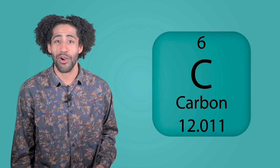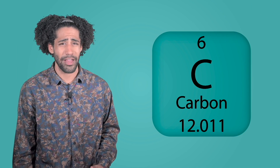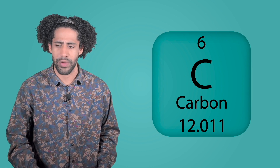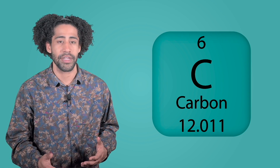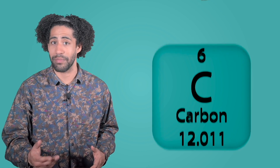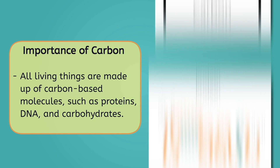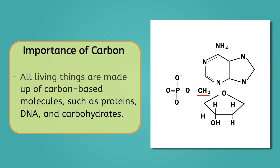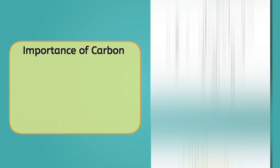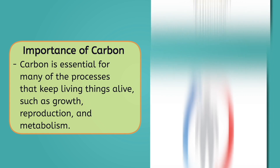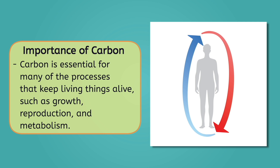Next up is carbon. This incredible element has a ton of flexibility with how it can bond with other elements, so it takes on many forms, from coal to diamonds to elephants. All living things are made up of carbon-based molecules, such as proteins, DNA, and carbohydrates. These molecules are essential for many of the processes that keep living things alive, such as growth, reproduction, and metabolism.